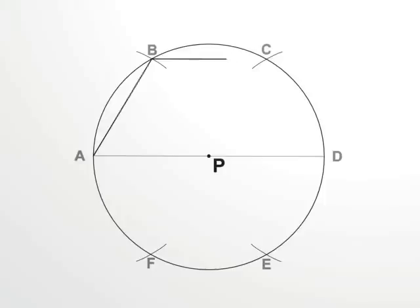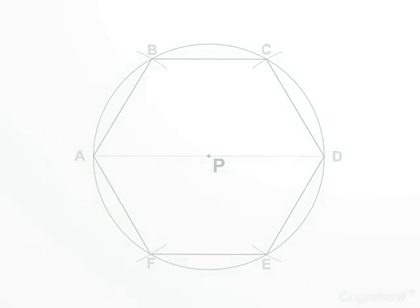Join points A, B, C, D, E, F and here we go. It's a regular hexagon. So this is how we learn commonly used geometrical constructions in engineering drawing.